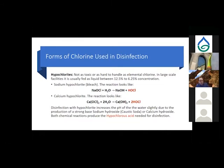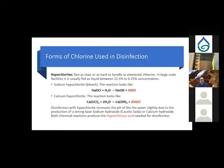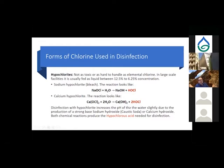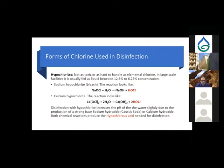In the hypochlorite reactions, we're still looking for hypochlorous acid. When sodium hypochlorite is added to water, we get NaOH (caustic soda, a strong base) plus hypochlorous acid. The same applies to calcium hypochlorite, which yields calcium hydroxide and hypochlorous acid. Because these produce a strong base, they drive pH higher in the water — opposite to elemental chlorine — yet they still produce the hypochlorous acid needed for disinfection.